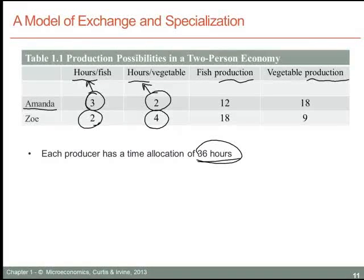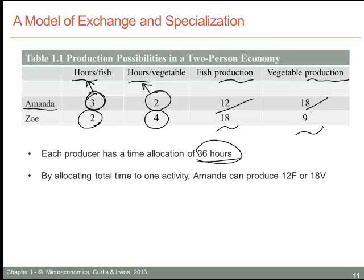Since Amanda requires three hours to catch each basket of fish, she would be able to produce 12 baskets of fish in the course of a week. By the same reasoning, she would be able to produce 18 baskets of vegetables. Zoe, by the same calculations, would be able to produce 18 catches of fish and nine baskets of vegetables. One way for each of these individuals to survive would be to divide their time between fishing and vegetable harvesting. An alternative would be for Amanda to specialize in one activity and Zoe in the other. We're going to examine whether there is a gain to be had from specialization.